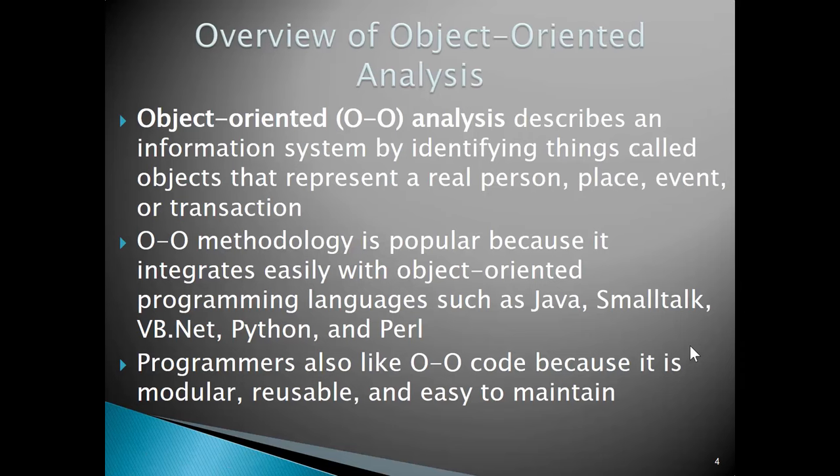Object-oriented analysis describes an information system by identifying things called objects that represent real people, places, events, transactions — anything that is an object that has attributes and methods. The object-oriented methodology is popular because it integrates with object-oriented programming languages: Java, Smalltalk, VB.NET, Python, Perl. Programmers also like object-oriented code because it's modular, reusable, and easy to maintain. We're going to instantiate an object that can be instantiated hundreds of millions of times within a program, doing the same thing for each record in a database.